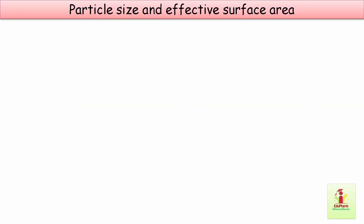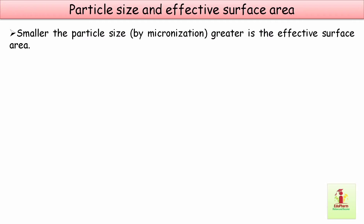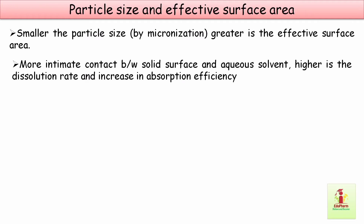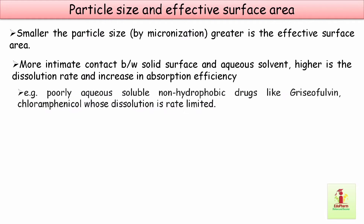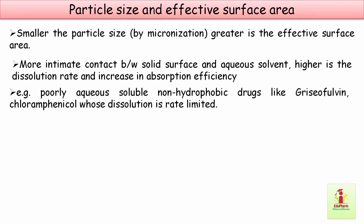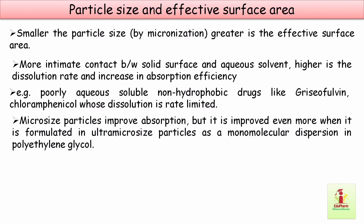The next factor is particle size and effective surface area. Dissolution rate is directly proportional to effective surface area, and smaller particle size means greater effective surface area. More intimate contact between the solid surface and the aqueous solvent results in a higher dissolution rate and increased absorption efficiency. Poorly aqueous-soluble, non-hydrophobic drugs like griseofulvin and chloramphenicol, whose dissolution is rate-limited, are notable examples. Particle size effects are of particular consequence for slowly dissolving drugs, and particle size reduction usually results in more rapid and complete absorption.